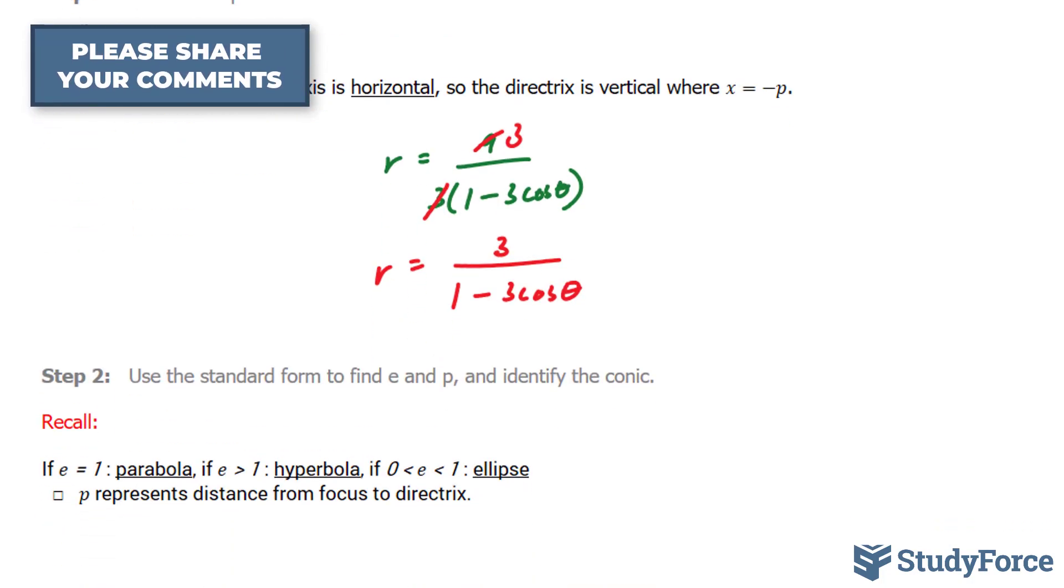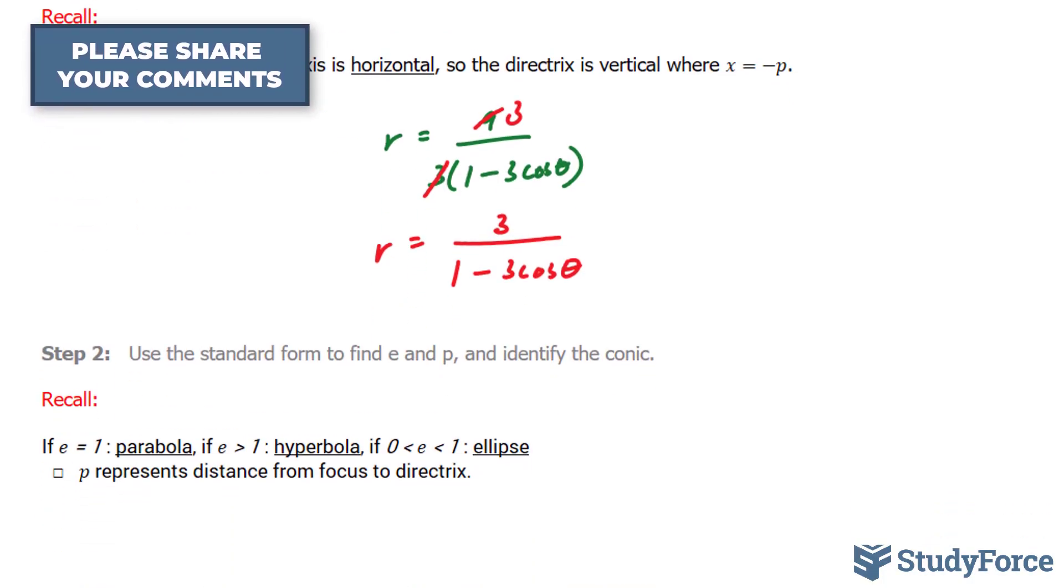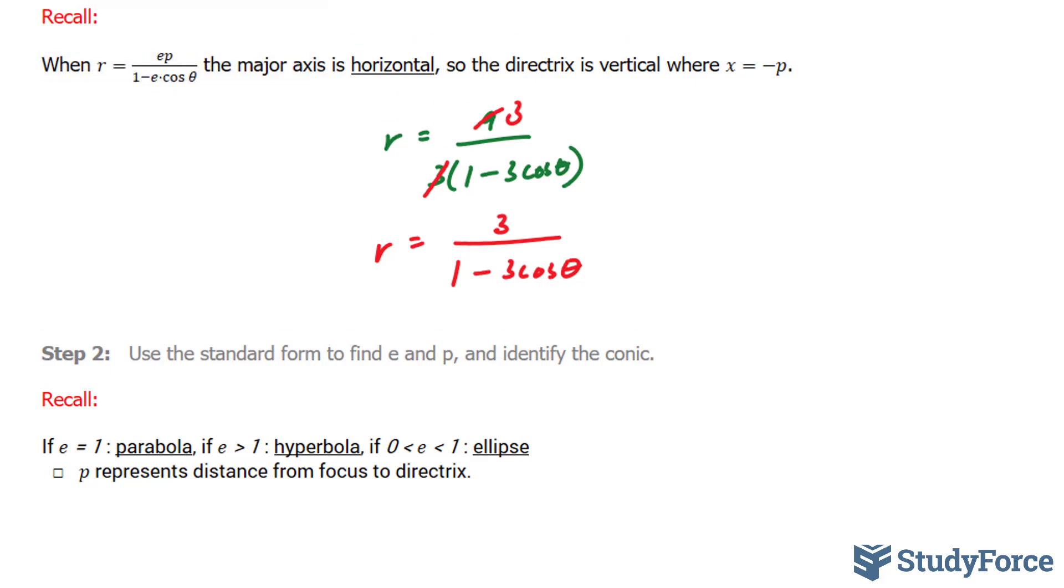The next step is to find out what e and p are. What's important about e is that it tells us whether it's a parabola, hyperbola, or an ellipse.